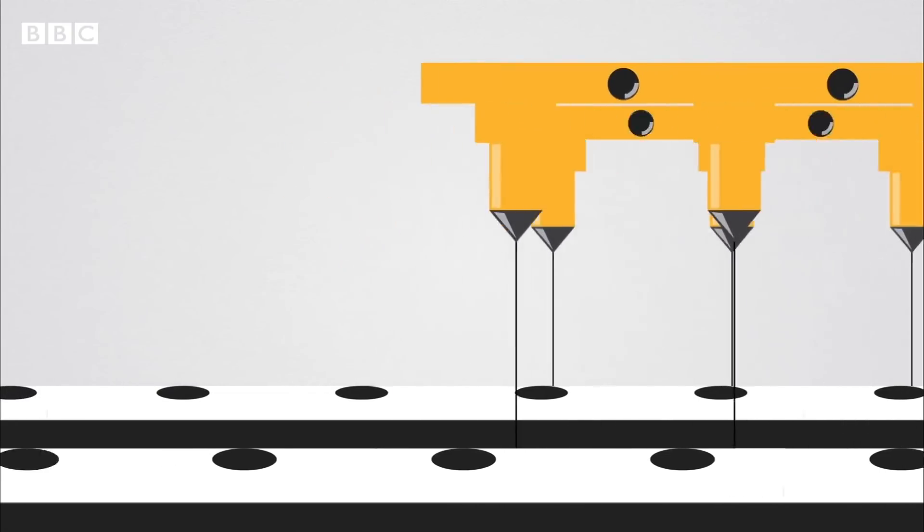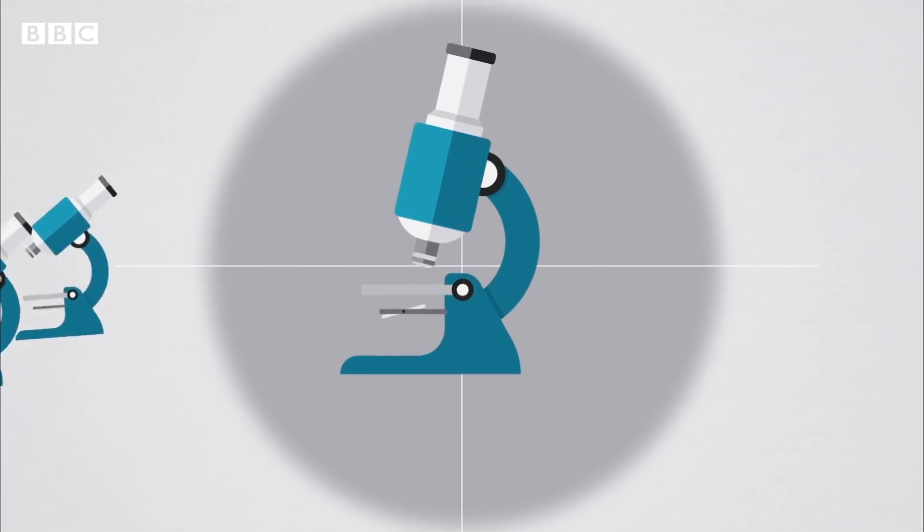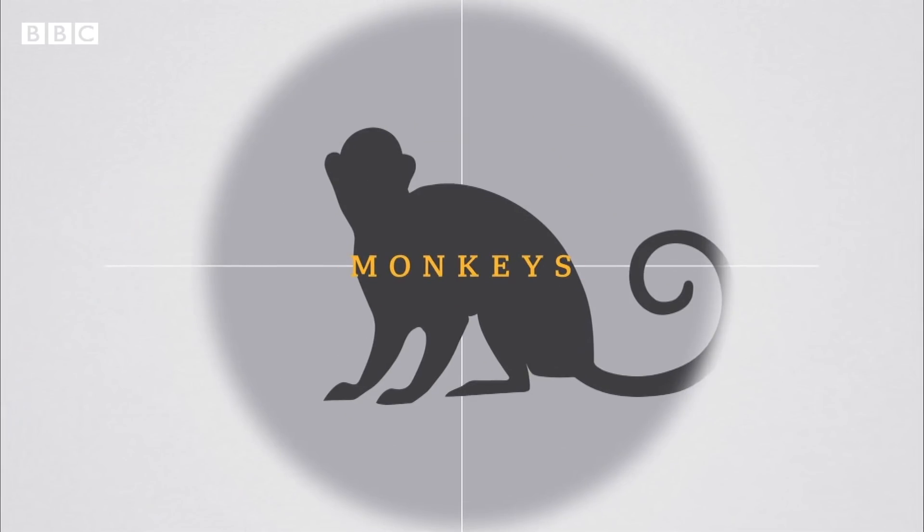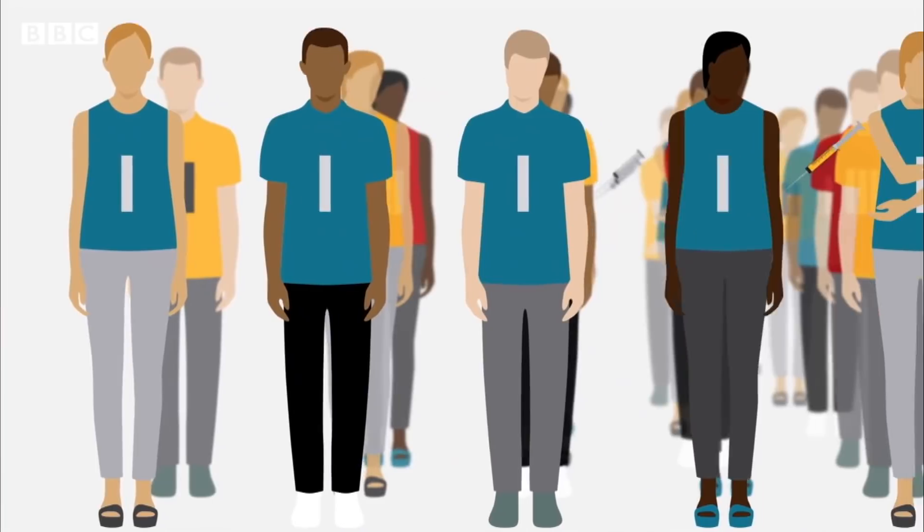Before any testing happens in humans, the vaccine is tested on animals in a laboratory. In the case of COVID-19, ferrets, mice and monkeys have all been used. That's because they're similar to humans in their physiology and biology.